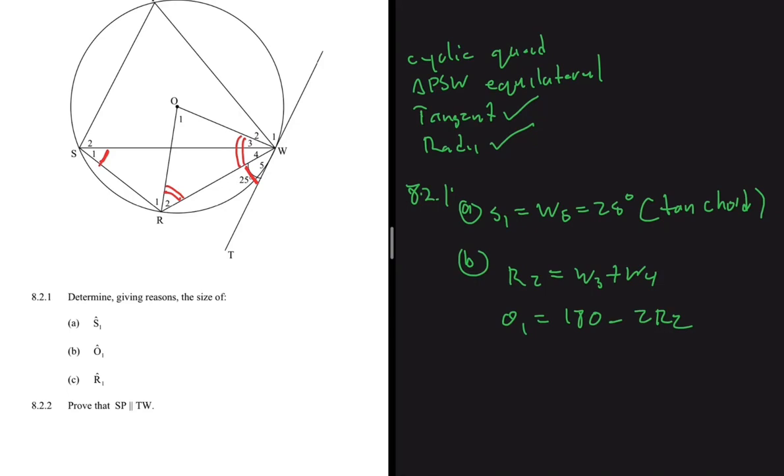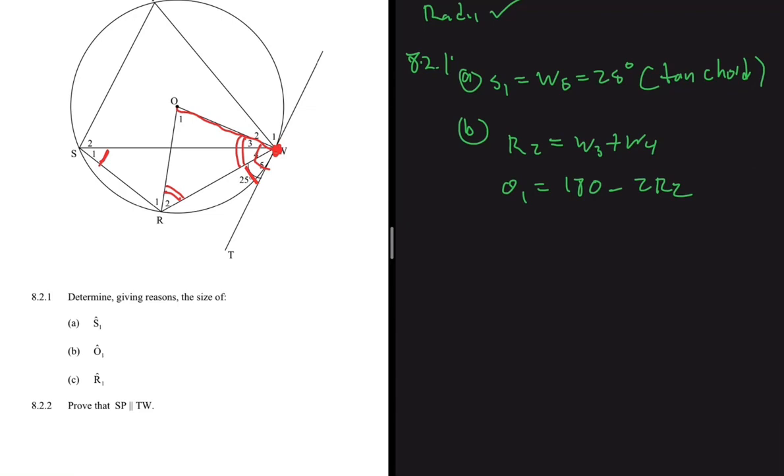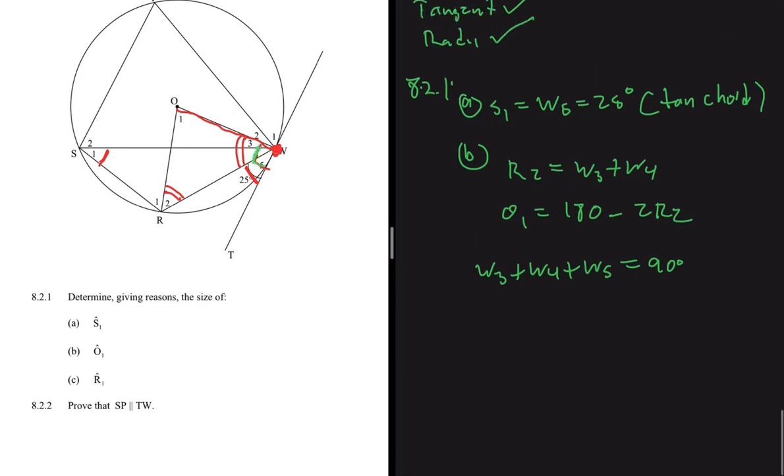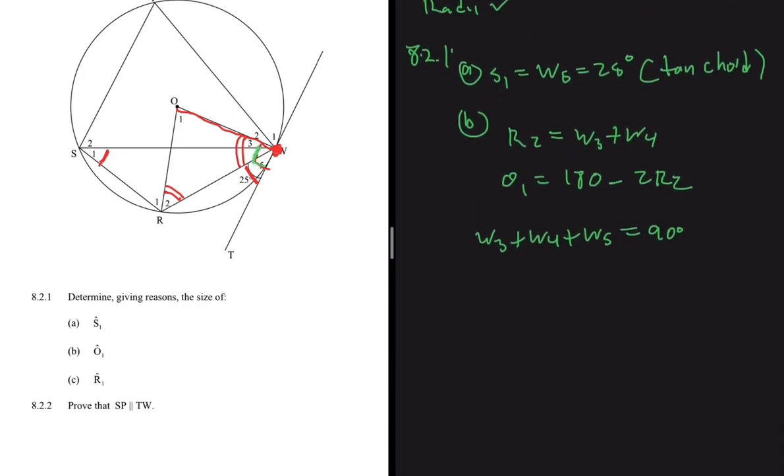OW is the radius, and where it touches the tangent, it forms an angle of 90 degrees. We know that for sure. So now we can see that w3 plus w4 plus w5 equals 90 degrees. I'm talking about this angle here. But we know what w4 is and we know what w5 is. w5 is 25 degrees.